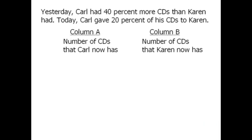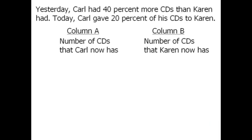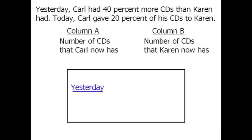Alright, let's begin by assigning some nice values to the number of CDs that Karen and Carl owned yesterday. Let's say that Karen owned 100 CDs yesterday, and since Carl had 40% more CDs, that means Carl would have had 140 CDs.